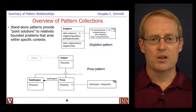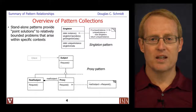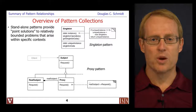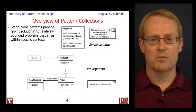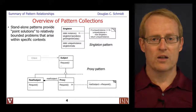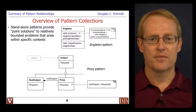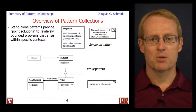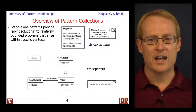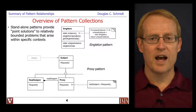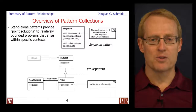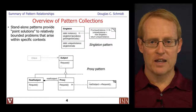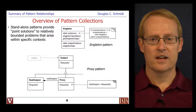For example, the proxy pattern described in the Gang of Four and POSA One book provides a way to shield clients from the location where the objects actually reside — that's fairly narrow. Likewise, the singleton pattern makes it possible to provide global access to one instance of an object without requiring the use of global variables, also a fairly narrowly defined context.